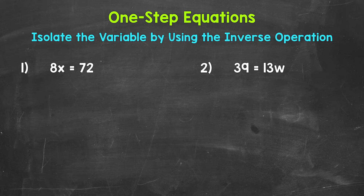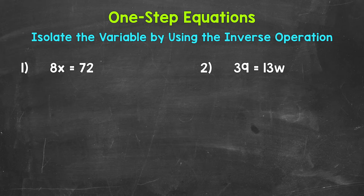Let's jump into number one, where we have 8x equals 72. We have a number next to a variable — that means we are multiplying. So, this is 8 times x equals 72. Anytime you see a number next to a variable, that is multiplication. We need to isolate that variable of x. Since x is being multiplied by 8, we need to undo that multiplication by using the inverse operation — the opposite operation.